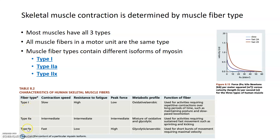Depending on the type of myosin and the type of fiber, there are differences in how fast the muscle fibers contract, how much force they generate, and how resistant they are to fatigue — as you can see listed in the table here. We also have a graph in this corner. Type 1 fibers generate the least amount of force, while type 2a and 2x generate more, with 2x generating the most force per fiber. Contraction speed also differs: type 1 is a slow-contracting or slow-twitch fiber, and type 2 fibers contract faster.